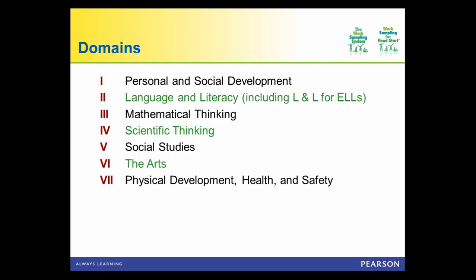The seven domains for the Work Sampling System preschool age three through grade three are: personal and social development, language and literacy (including for English language learners), math, science and social studies, the arts, physical development, and health and safety. The ordering of these domains is not necessarily sequential. Personal and social development — capturing learning behaviors like sitting quietly, listening attentively, beginning and completing tasks, self-concept, and interactions with others — forms the foundation for learning language, math, and science.